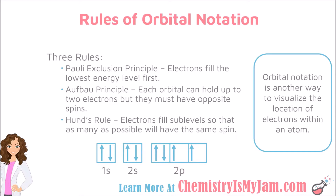Keep in mind that even though electrons are very tiny, they are still following the rules of physics, which is why electrons need to have opposite spins within an orbital. An electron is a charged particle — it has a negative charge. So if you have one charged particle spinning in one direction, it is going to create a magnetic field. Another charged particle spinning the opposite direction would counteract that magnetic field, which is why the Aufbau Principle says that electrons must have opposite spins within each orbital.